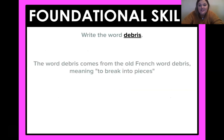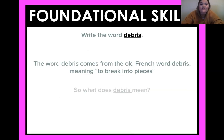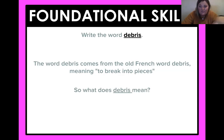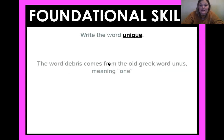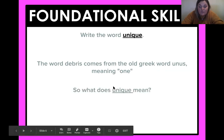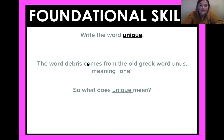I'll give you a hint — this actually comes from the French word 'débris,' which means to break into pieces. So 'debris' means when something is breaking into pieces, like buildings or different things breaking apart, and those pieces are debris. The word 'unique' comes from the old Greek word meaning 'one.' So if you're unique, you're special — you're like the only one like you. That's why it's important to know where those base words come from.